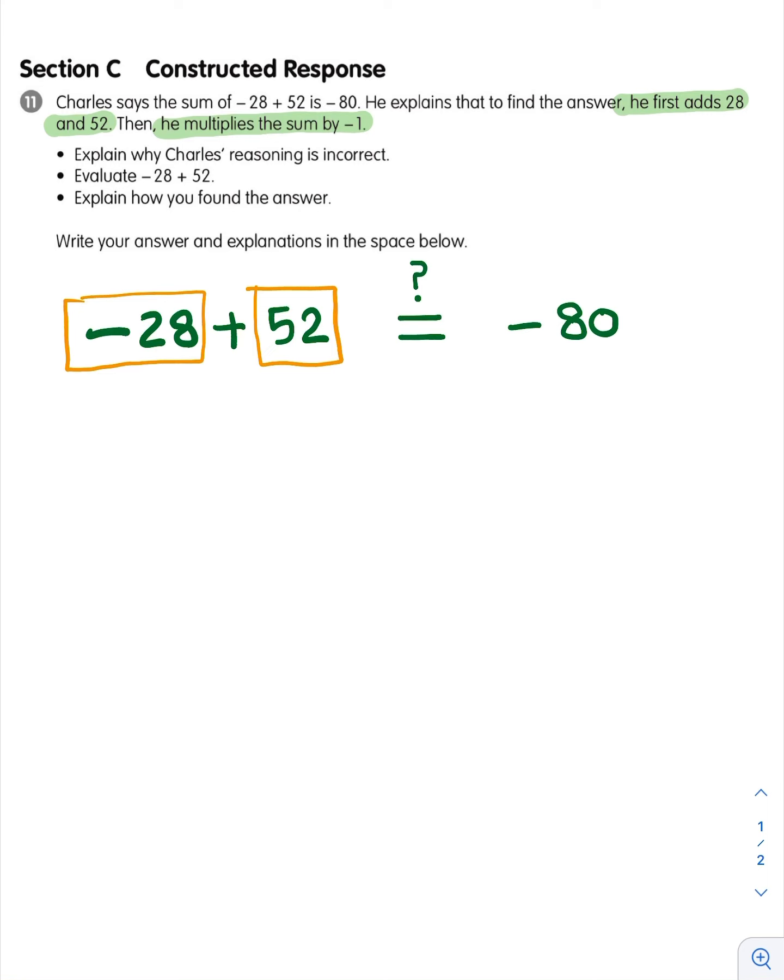Now, it's not going to be more positive than 52. It's going to be less positive than 52. How much less positive? Well, it's like we start with 52 positivities, and we remove, we cancel out 28 zero pairs. And so we know that the answer, negative 28 plus 52, we know that that should be a plus 24.